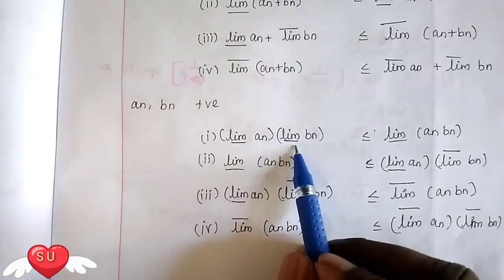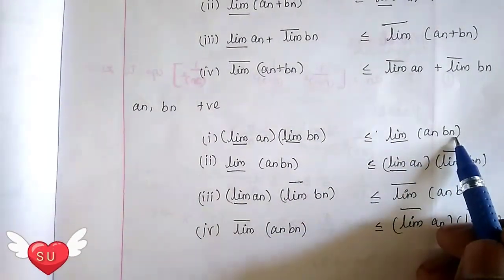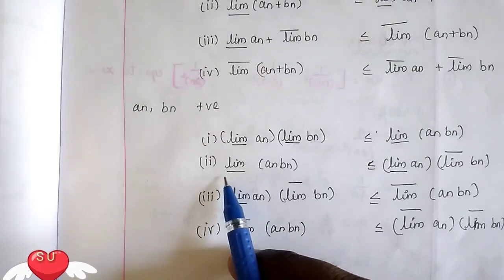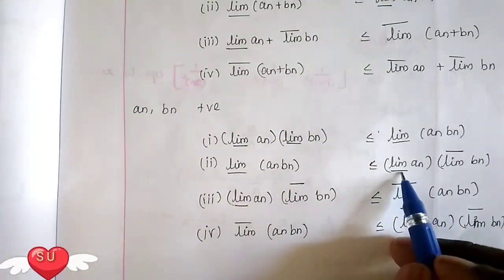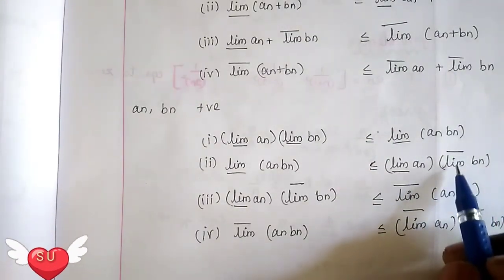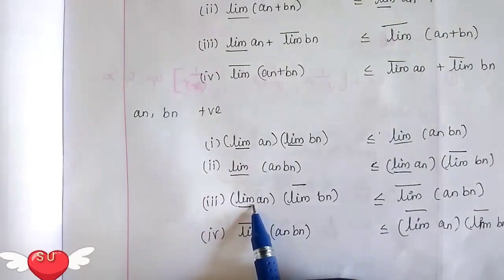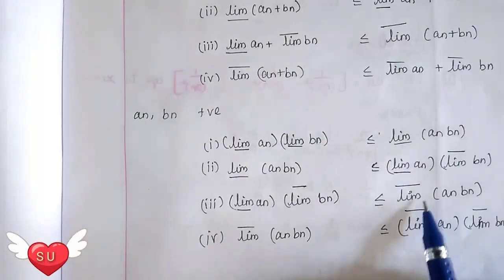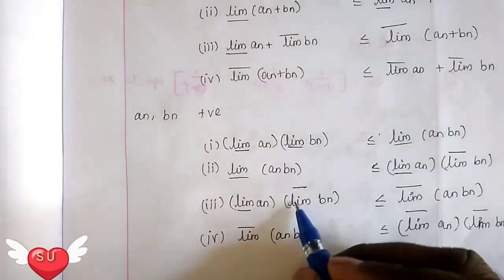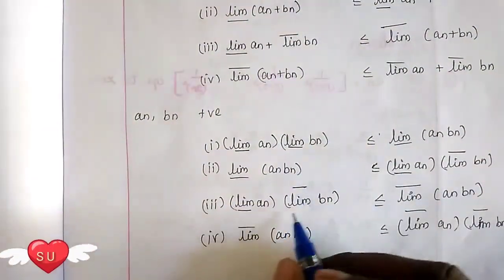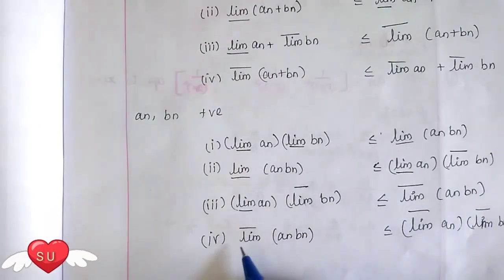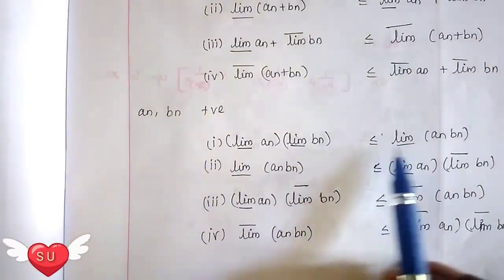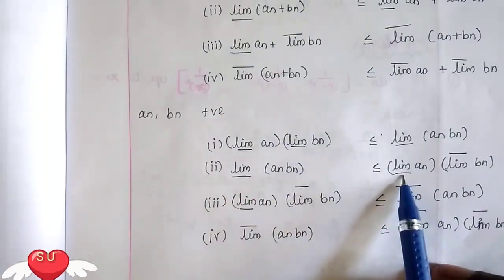For an·bn: the lower bound is less than or equal to the limit of an·bn. The lower bound limit of an times the lower bound limit of bn — even if the limit of bn is reduced — the limit of an and bn will have a lower bound.